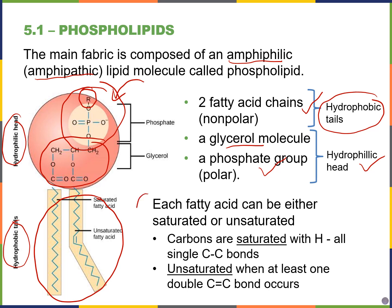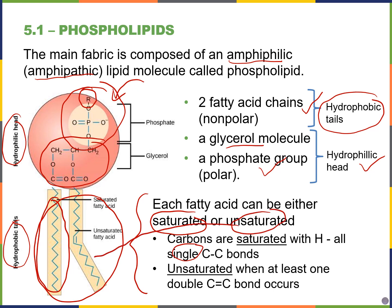Looking at the fatty acid tail portion, the fatty acid tails can be saturated, which means that the tail region is only comprised of single bonds, or it can be unsaturated. Remember that when the fatty acid tails are unsaturated and these are cis-type double bonds, then we have kinks or bending in the tail, which makes that fatty acid more fluid. So unsaturated tails are more fluid, whereas the saturated tails are more solid.